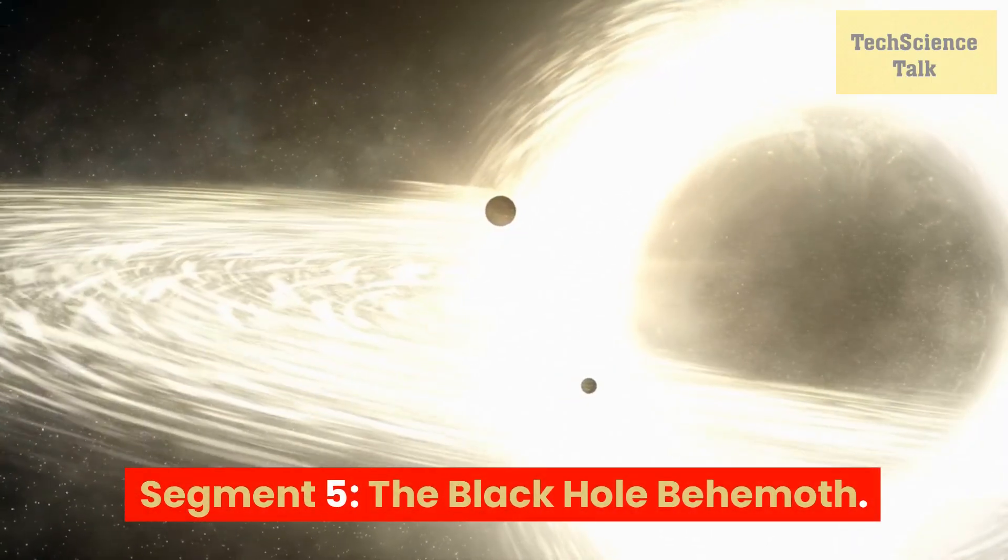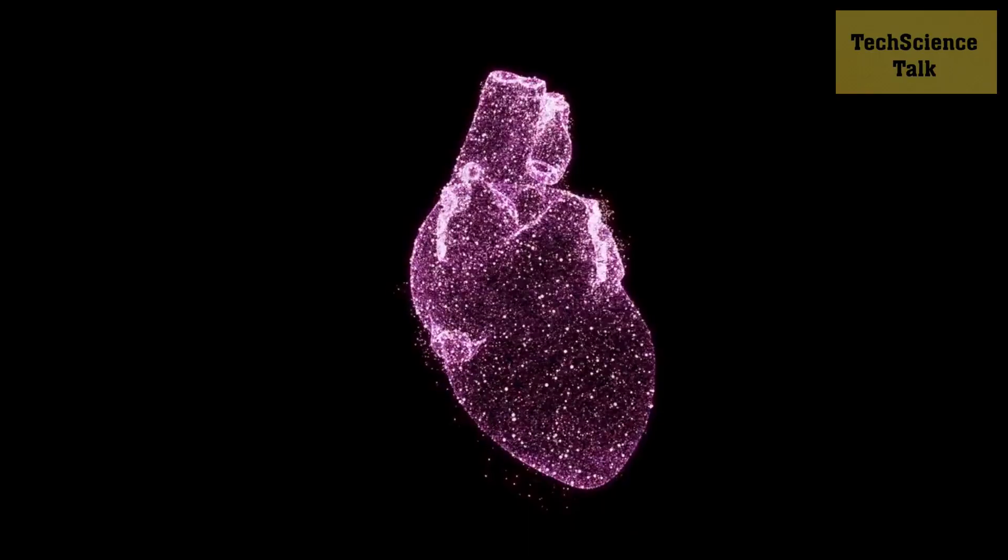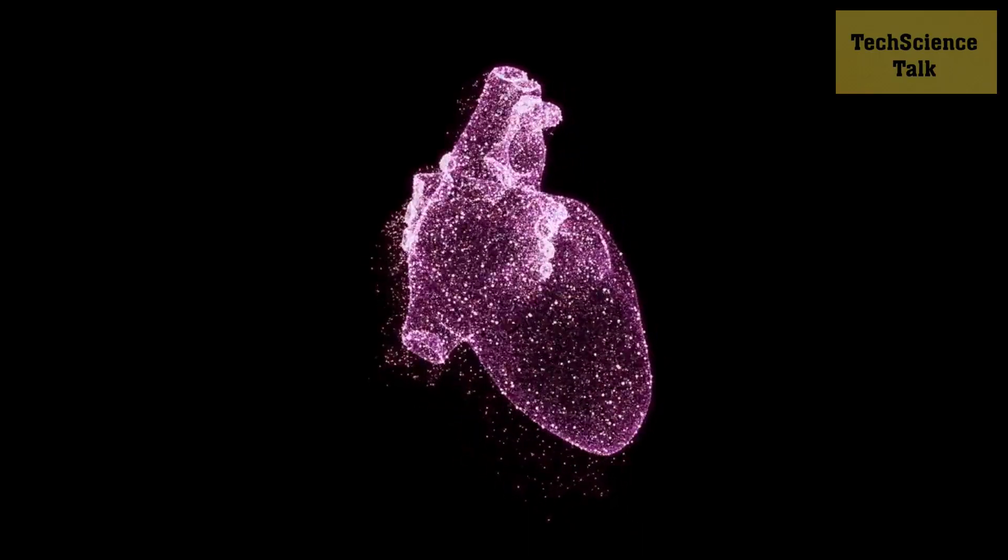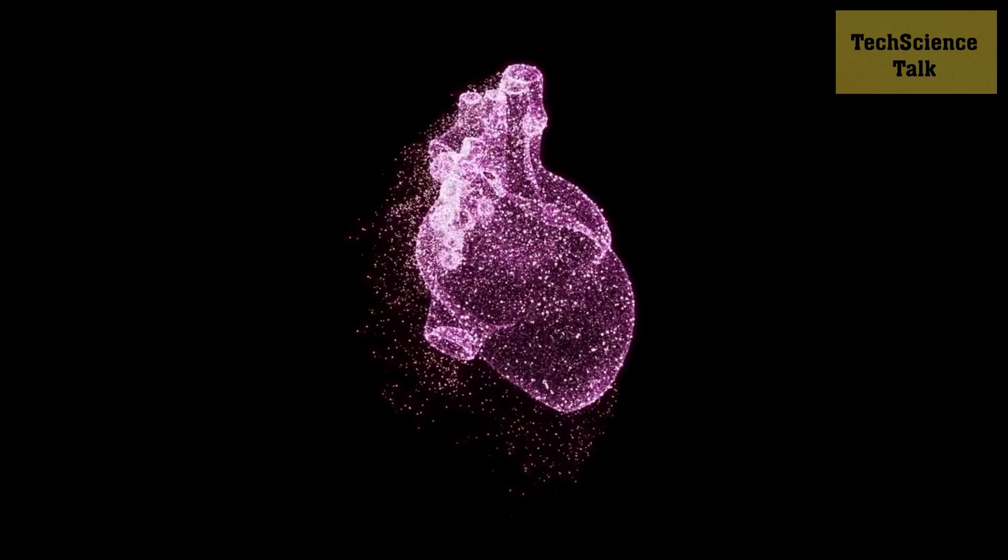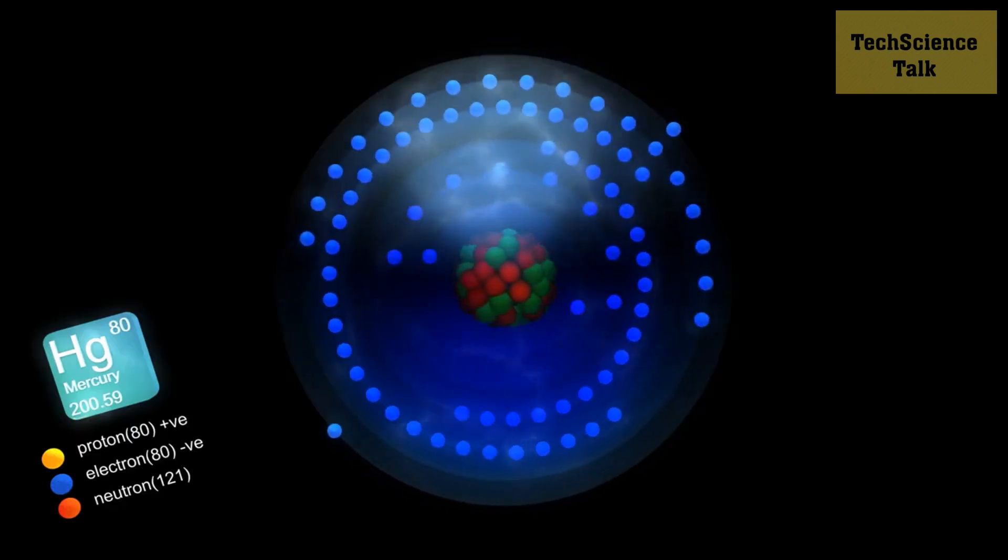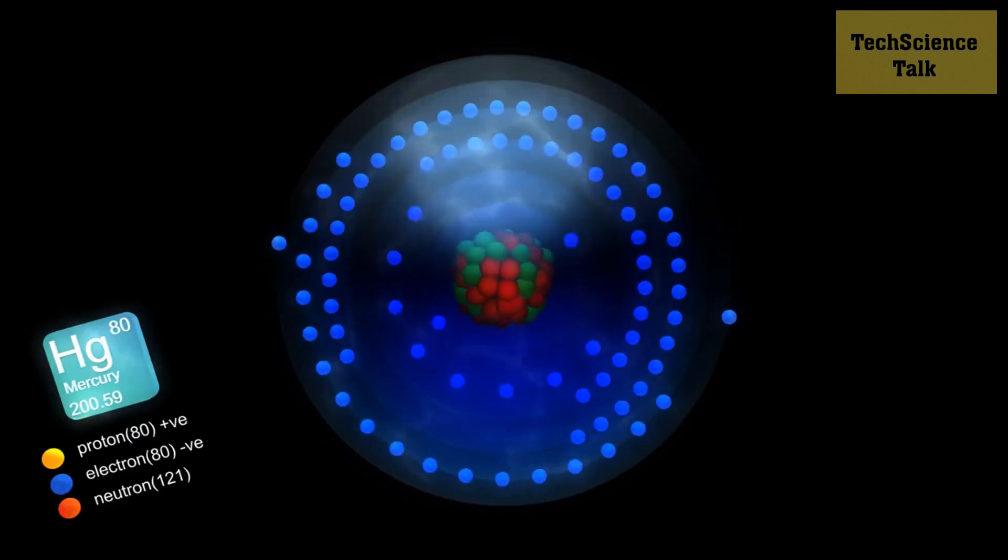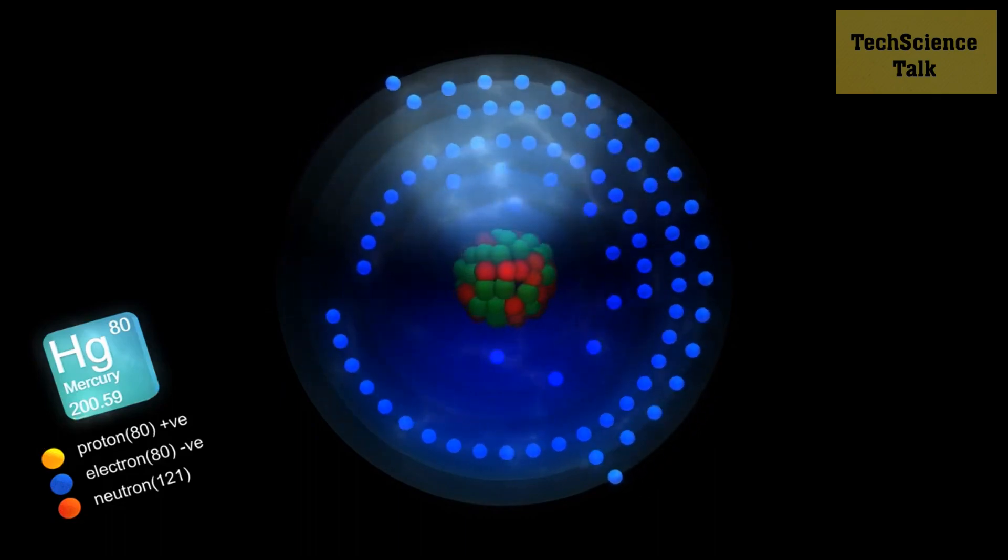Segment 5: The Black Hole Behemoth. Explore the heart of the Andromeda Galaxy, where a supermassive black hole lurks. Uncover the astonishing fact that this cosmic behemoth has a mass over 100 million times that of our Sun.